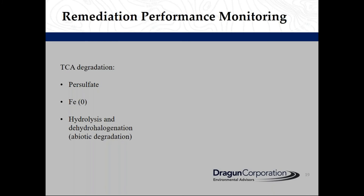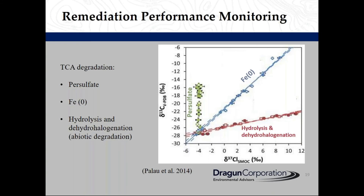Another application of CSIA is to monitor the performance of an active remediation system. For example, TCA or trichloroethane can be treated using heat-activated persulfate, zero-valent iron, and hydrolysis and dehydrohalogenation, which are all abiotic degradation processes. Based on a graph by Plow and others, we can use carbon and chlorine isotopes to understand what process is affecting the contaminant, because each process has a different isotopic trend. For example, if we have a permeable reactive barrier at a TCA-impacted site and our isotope data follow the blue line, it means the PRB system is functioning.